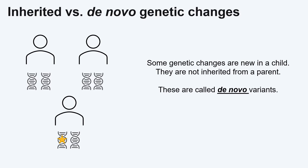If a variant is unique to the child and has not been passed down from a parent, this variant is called de novo. We call these de novo variants because de novo means new.